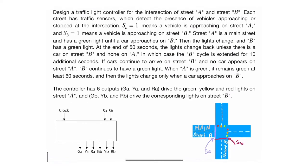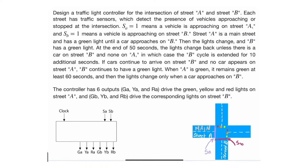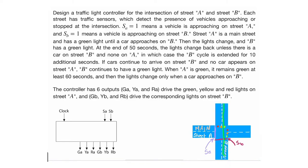Here I'm showing some of the description and specification for the traffic light controller. We have two streets: street A and street B. Street A is the main street. Each street has sensors that detect whether a car is passing through or stopping. Sensor A detects cars on street A, and sensor B detects cars on street B.